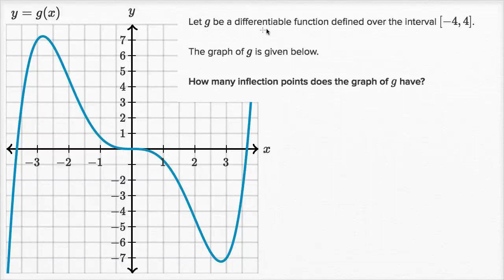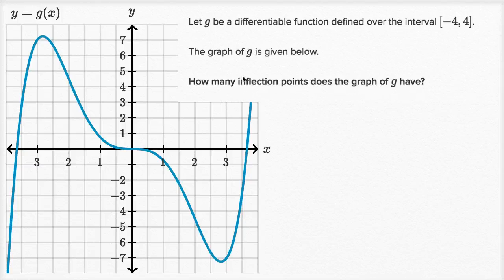We're told let g be a differentiable function defined over the closed interval from negative four to four. The graph of g is given below. How many inflection points does the graph of g have?